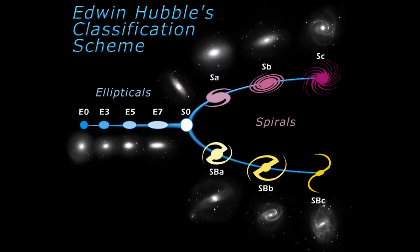Almost a hundred years ago, Edwin Hubble developed a scheme in which many of the observed galaxies can be arranged. On the left of the diagram, the elliptical types are found according to the degree of increasing ellipticity, starting from the totally symmetrical spherical shape.